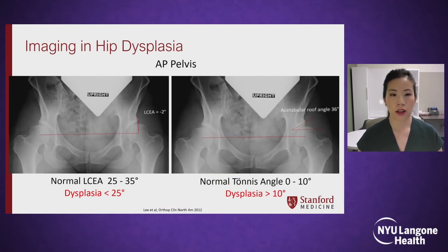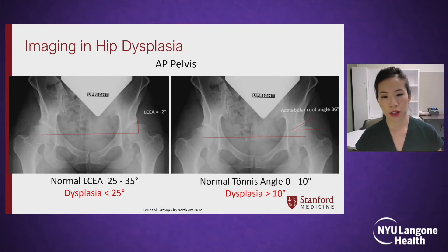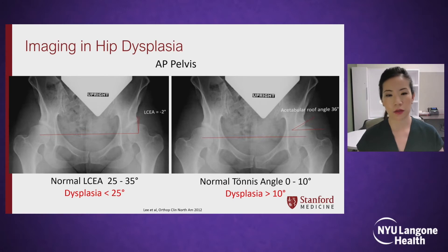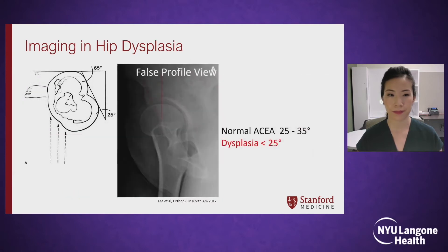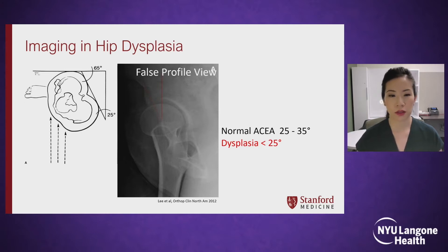For imaging, we usually get a standing AP pelvis and measure the lateral center edge angle and the Tönnis angle. In dysplasia, the lateral center edge angle is less than 25 degrees. For the Tönnis angle, we have usually thought of it as dysplastic if it is elevated over 10 degrees, but more recent studies have suggested maybe a lower cutoff of 8 degrees. We also obtain the false profile view, which is a 65-degree oblique view of the hip, and we can measure the anterior center edge angle. With dysplasia, that is usually less than 25 degrees.